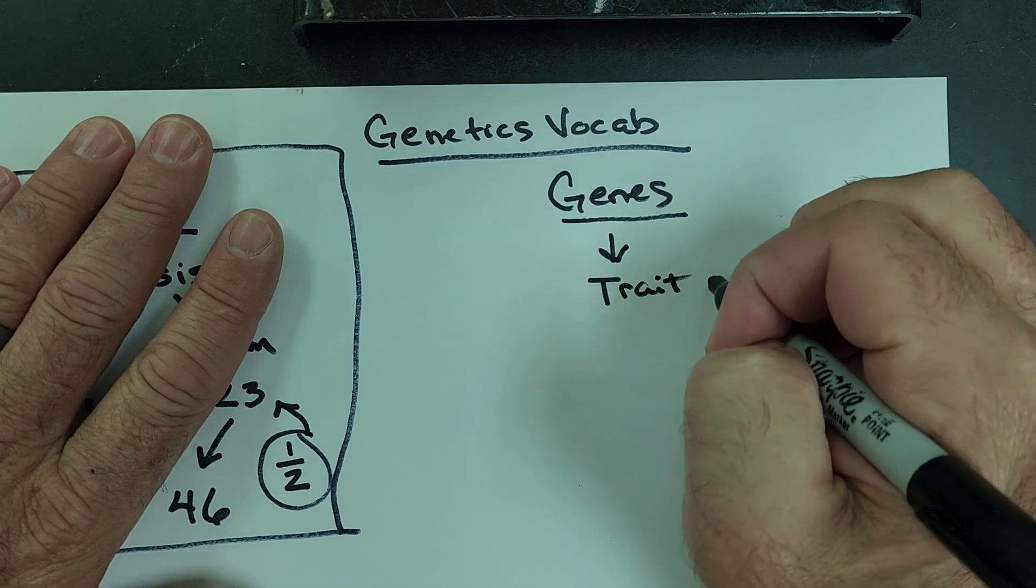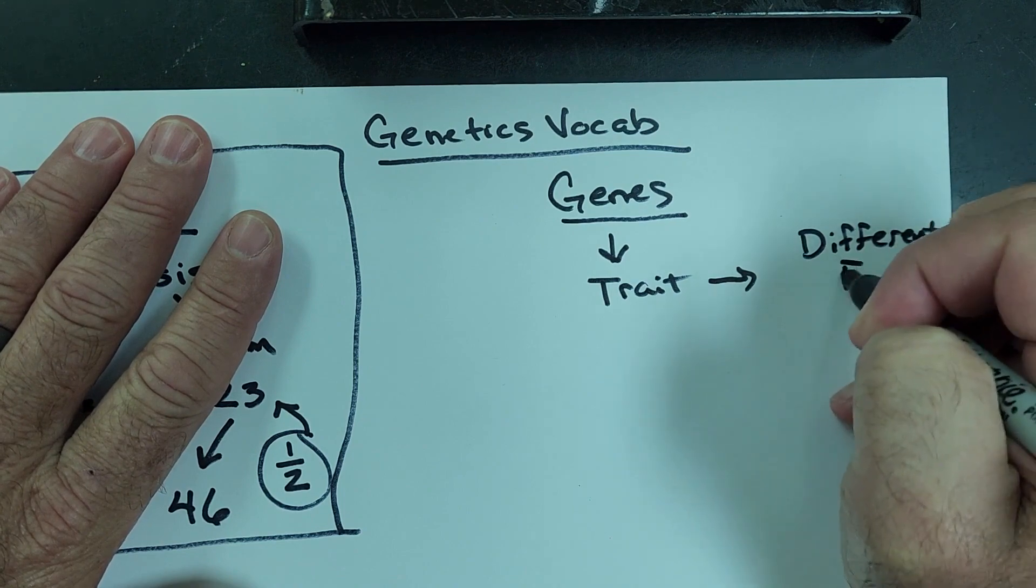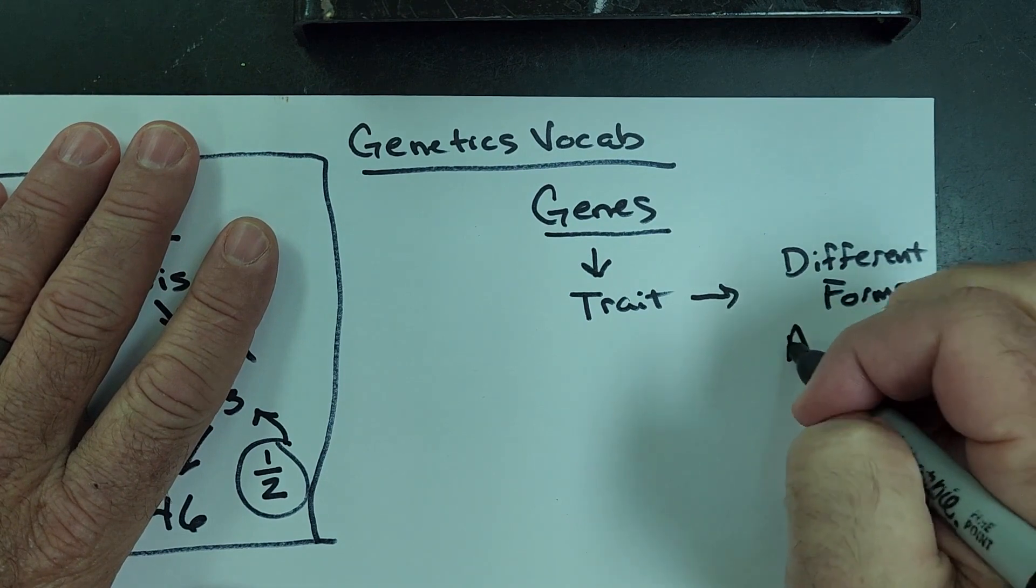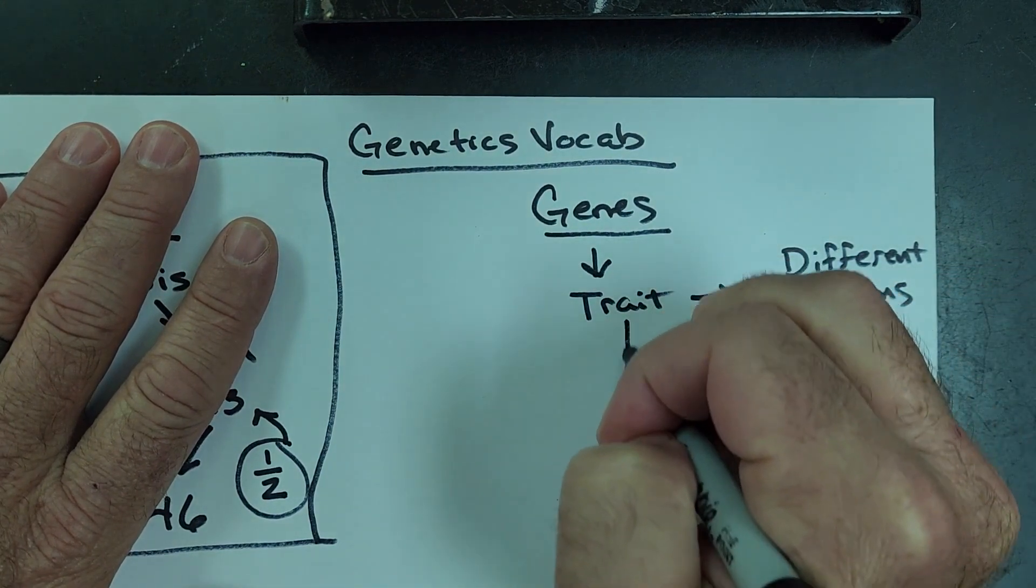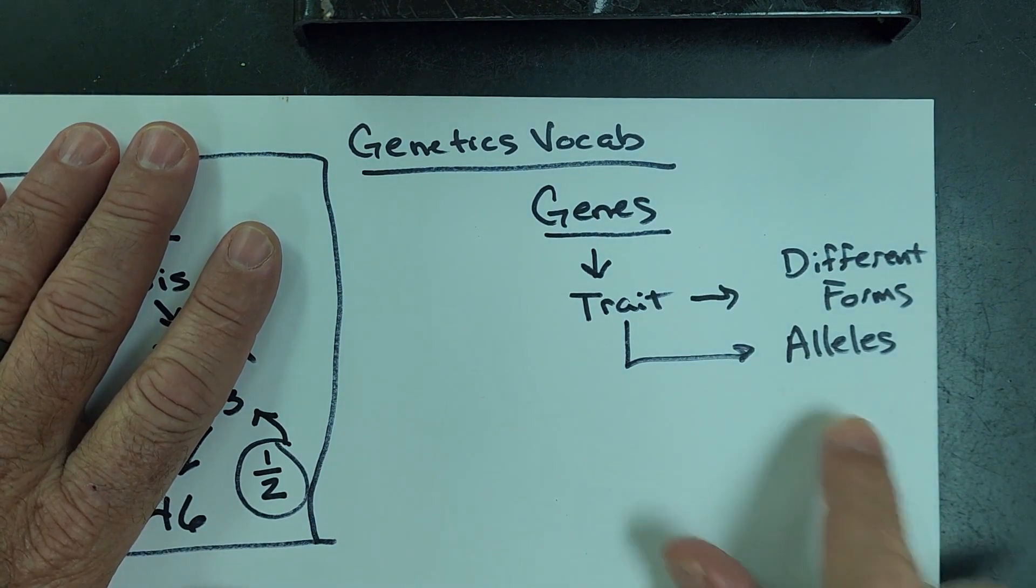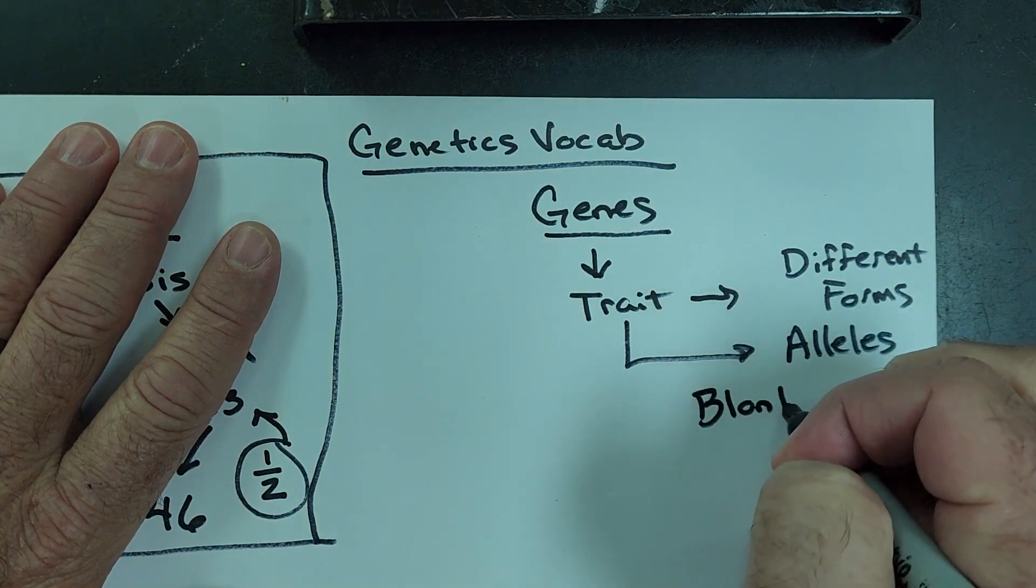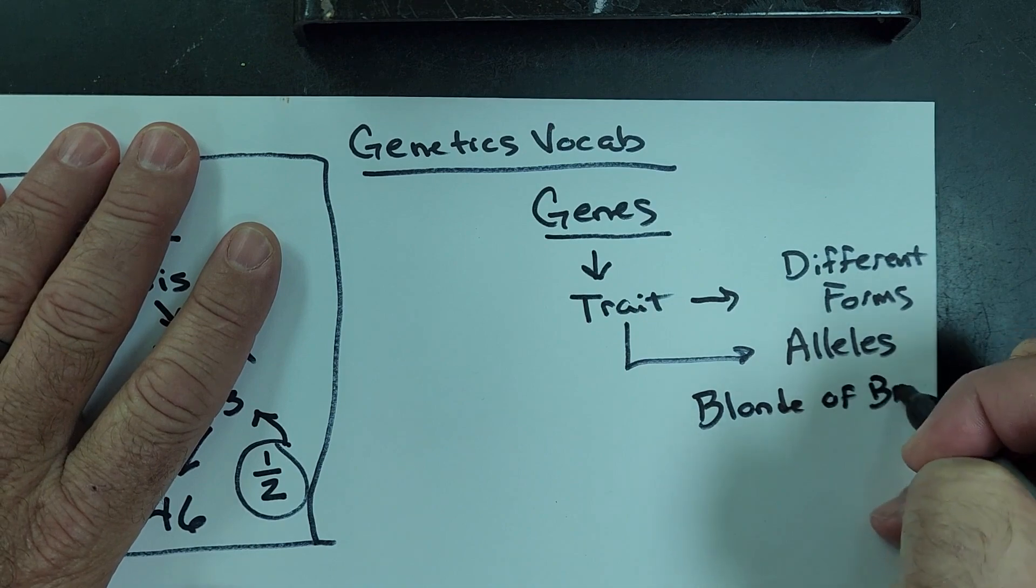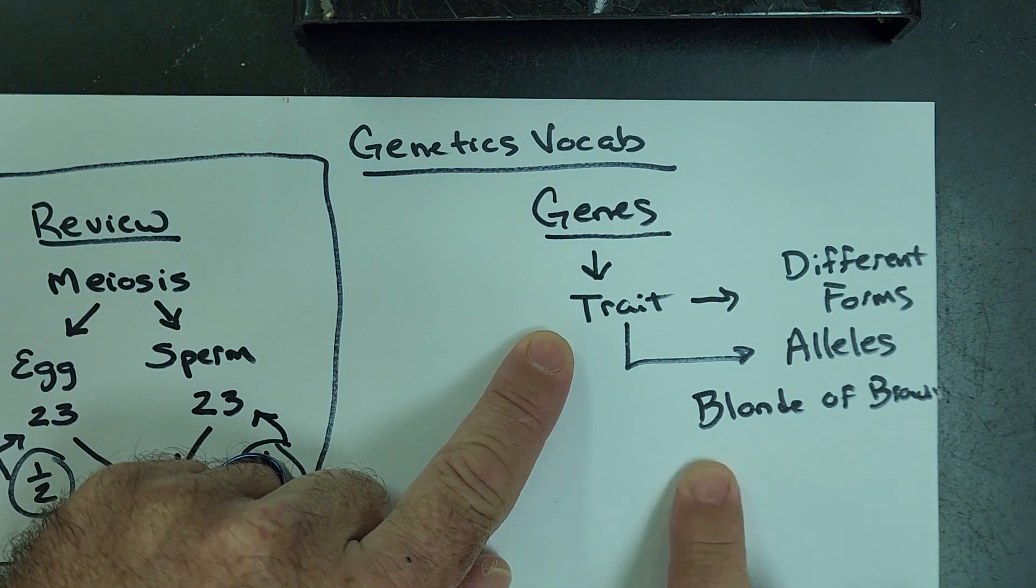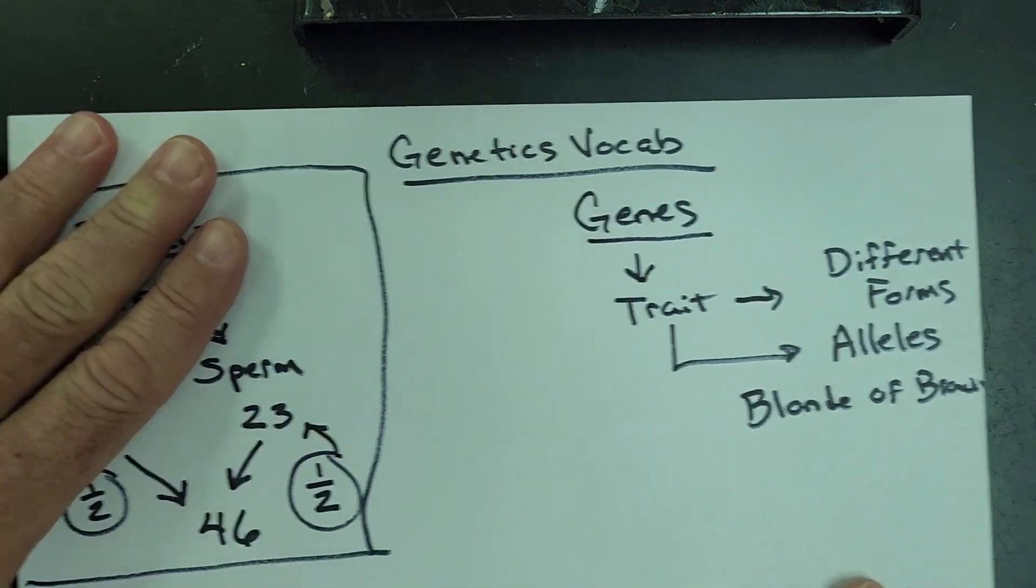The different forms of a trait are called alleles. So traits are alleles and alleles are traits. Alleles could be things like blonde hair or brown hair. That trait is the same, it's hair color, but they're different forms. One says light colored hair and the other says darker colored hair.